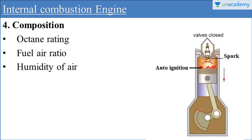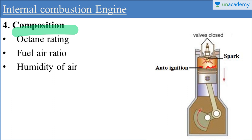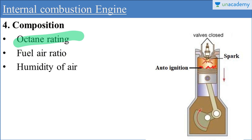The next factor is composition. Generally the fuel-air ratio is the prime factor to control knocking. There are some sub-factors within composition that affect it: octane rating, fuel-air ratio, and humidity of air. Regarding octane rating, as discussed in the previous lecture, a higher octane number of fuel reduces the tendency of knocking.